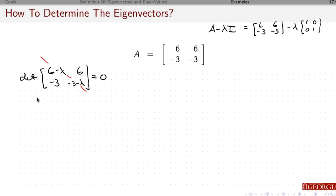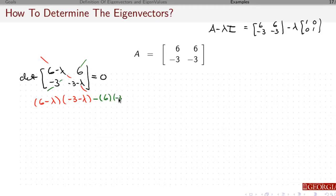So if I go down that direction, I'm going to get 6 minus lambda times minus 3 minus lambda. If I go across that direction, I'm going to have minus 6 times minus 3, and that has to equal 0.